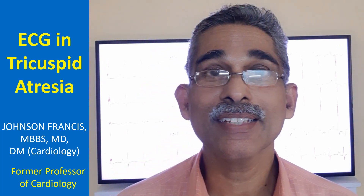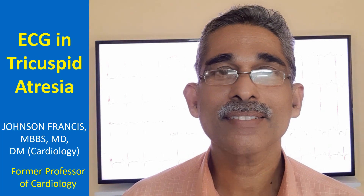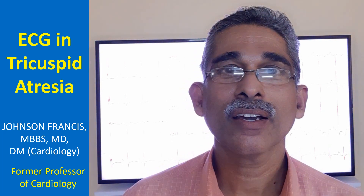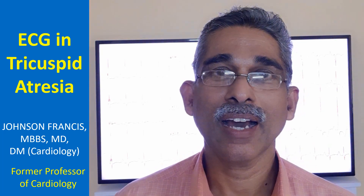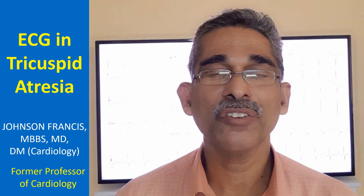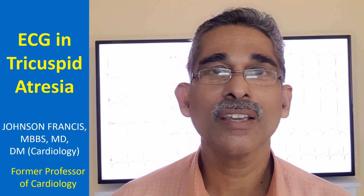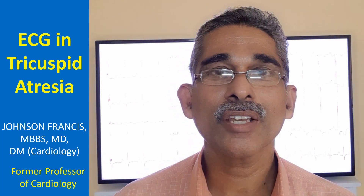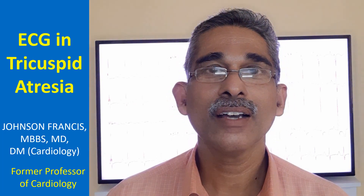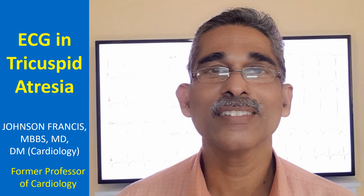I am going to discuss an ECG in tricuspid atresia. The teaching is that if you see right atrial enlargement along with left axis deviation and dominant left ventricular forces on ECG, you have to think of tricuspid atresia if it is a cyanotic congenital heart disease.